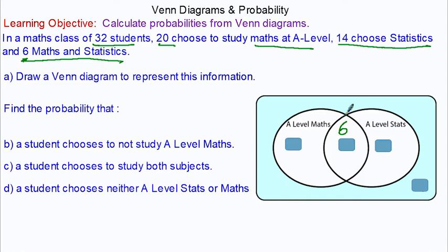Because six choose both, that must mean eight students choose stats but not maths. And 20 choose maths, six of them also choose stats, so that would be 14. We've got a total of 28 of 32 students, so the difference between the two would be four. You'd have four students who choose neither.